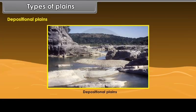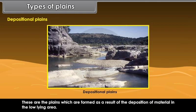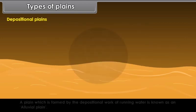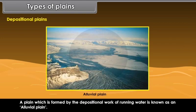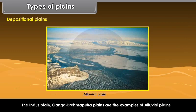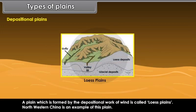Depositional Plains are formed as a result of the deposition of material in low-lying areas. Different agents perform depositional work such as running water, wind, and glaciers. A plain formed by the depositional work of running water is known as an alluvial plain — the Indus Plains and Ganga-Brahmaputra Plains are examples. A plain formed by the depositional work of wind is called a Loess Plain; North-Western China is an example of this type.